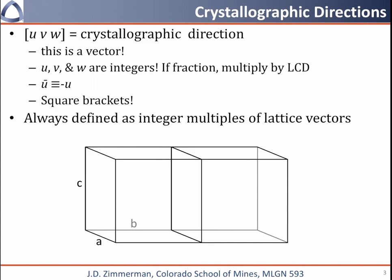Crystallographic directions are given by the letters U, V, W in square brackets. This is a vector in a crystal. U, V, and W are always integers. If they are a fraction when you calculate it, you have to multiply by the lowest common denominator to make them into integers. We represent negative numbers with a bar over the top, so U bar is equal to negative U.